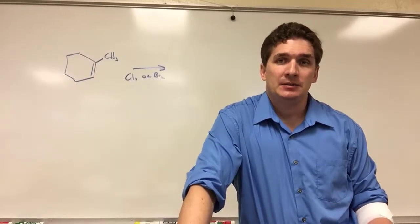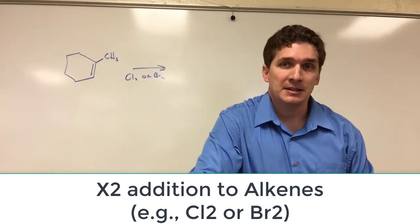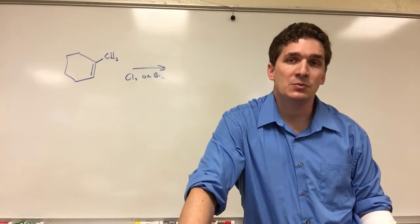Now we've talked about adding halogens using HBr, HCl, some type of strong acid that will form a carbocation, and we've talked about doing it with radicals.